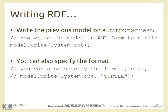To write an RDF to a file or print it, use the model.write() method with an OutputStream. System.out is an OutputStream that prints to screen; any file opened as an OutputStream will write the model in XML format by default. If you want a different format, such as Turtle, you specify it as a second parameter: model.write(outputStream, formatName).